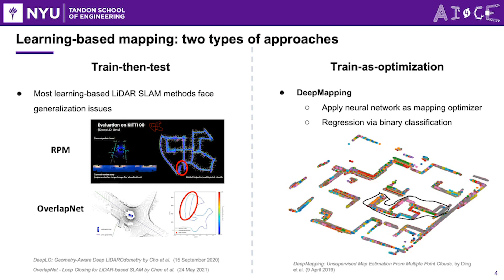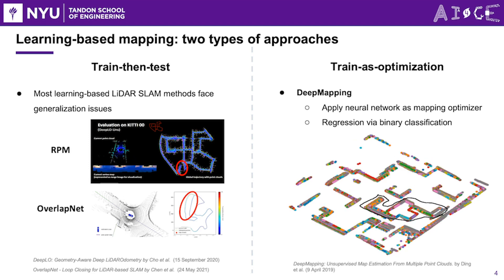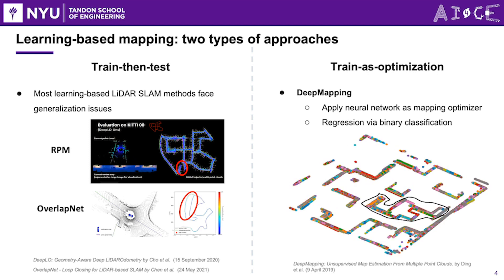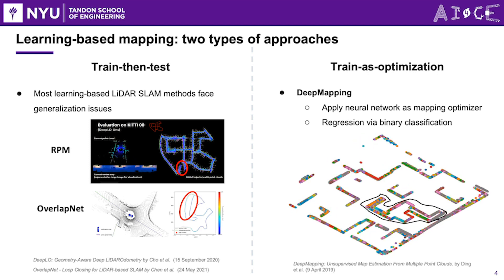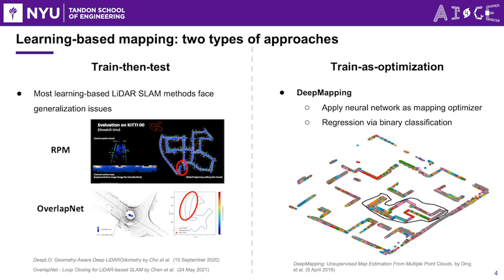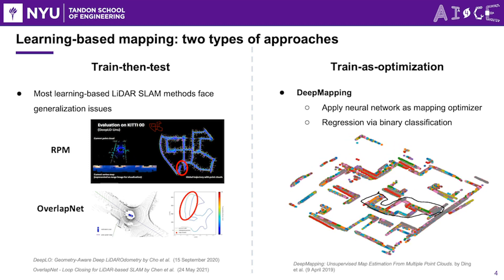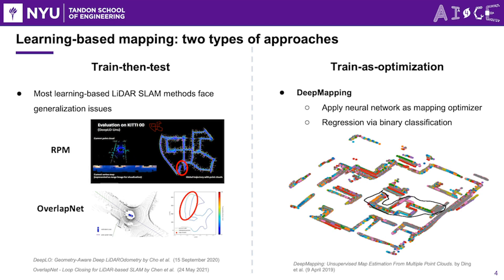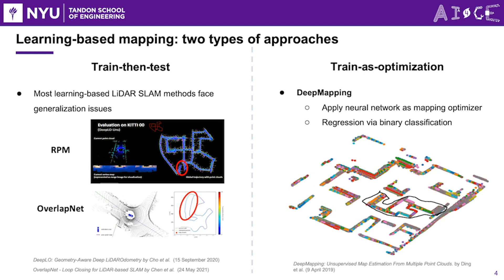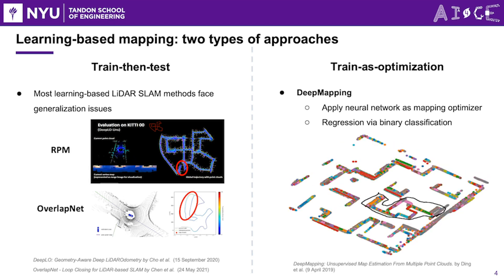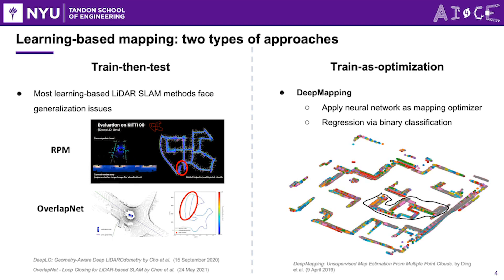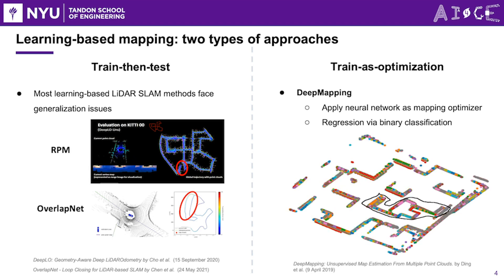The second type is the train-as-optimization approach, exemplified by DeepMapping. It utilizes a neural network as a mapping optimizer, eliminating the need for distinct training and testing sets. By replacing regression techniques with binary classification to optimize the map, this novel approach enhances the accuracy and efficiency of the mapping process in LiDAR SLAM.